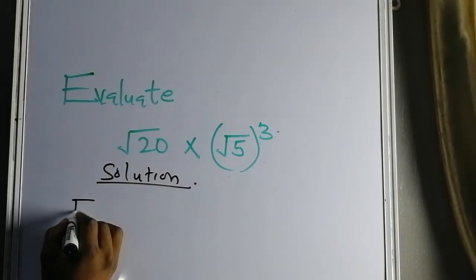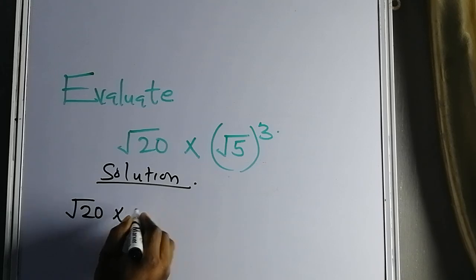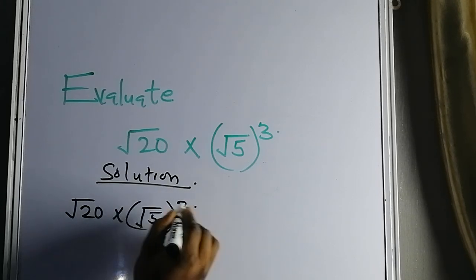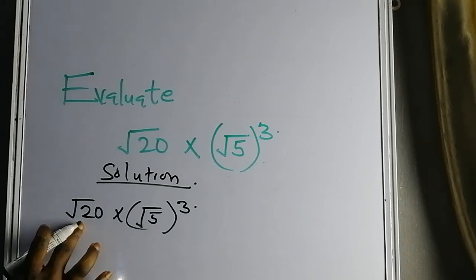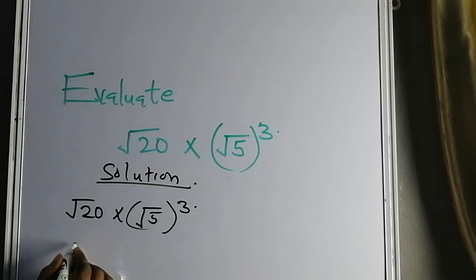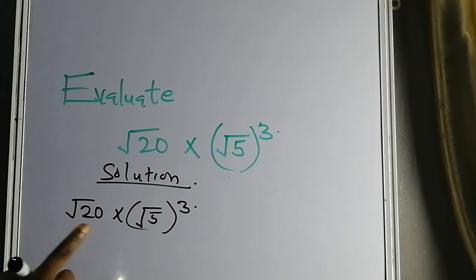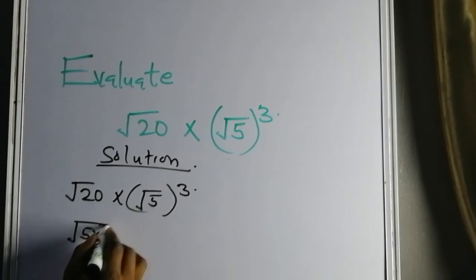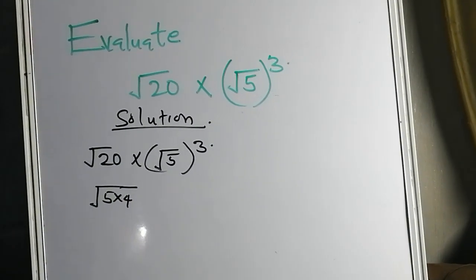This is √20 times (√5)³. This √20 is the same thing as saying—in surds, don't forget, you can split it in multiplication. This is simply saying 5 times 4; 5 times 4 is 20.